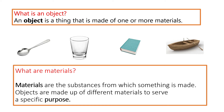What is an object? An object is a thing that is made of one or more materials. What are materials? Materials are substances from which something is made. Objects are made of different materials to serve a specific purpose.